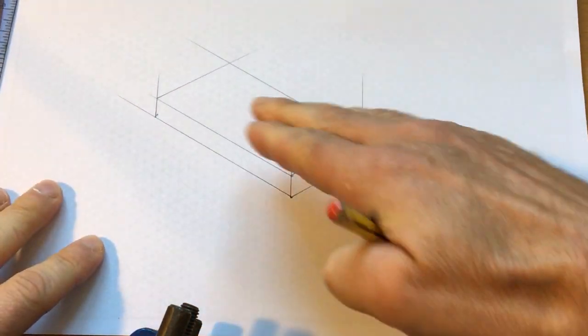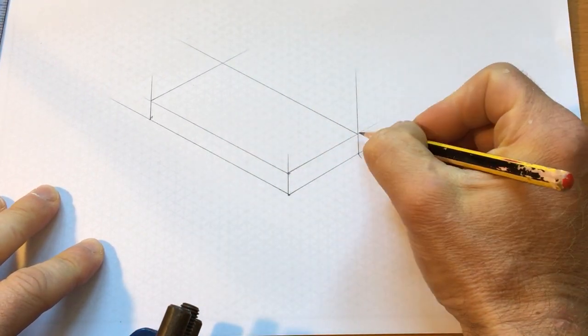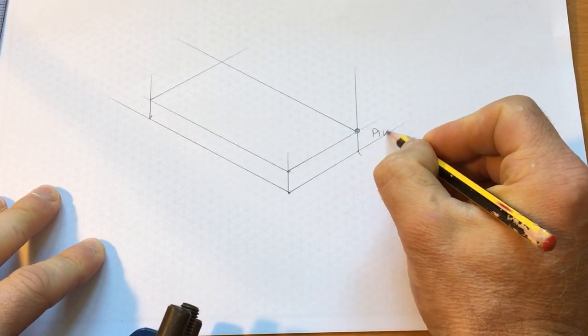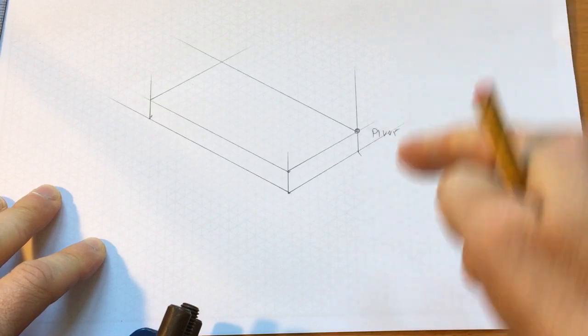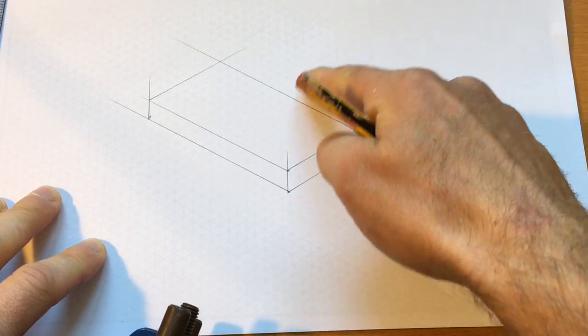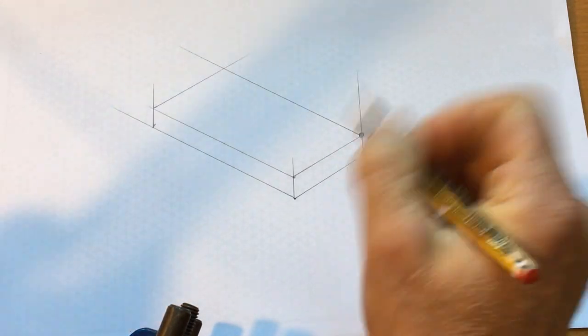It pivots up, so I want these two to match up if they were to close. Whatever distance this line is here—which was four centimeters—I'm going to continue that line up four centimeters, so if it was to pivot at that point, they would actually meet.